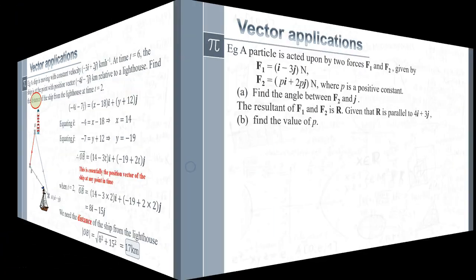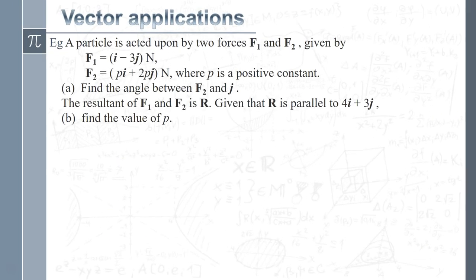Okay. Moving on, we had a look at one involving velocity and distance and so on. Let's now have a look at a vector question that involves forces. So we've got a particle being acted on by two forces, F1 and F2. And they're both being defined in terms of Newtons. And it's F2 that's the one that's going to cause a few issues because we've got Pi plus 2Pj, where P is just some value. First question says, find the angle between F2 and j, which is the vertical unit vector.